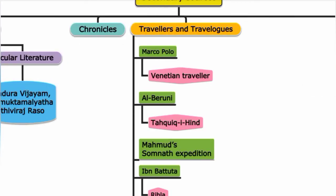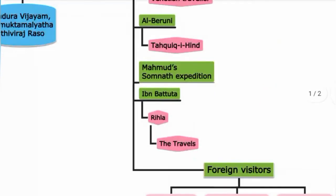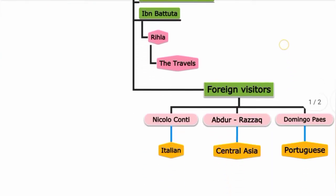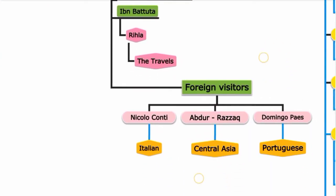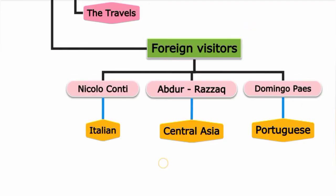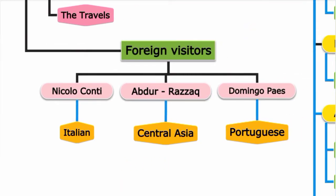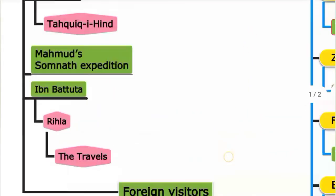Key travelers include: Marco Polo, a Venetian traveler; Al-Beruni, who wrote Tahik-e-Hind; Muhammad, who documented the Somnath Expedition; and Ibn Battuta, who wrote Rihla (The Travels). Foreign visitors also include Niccolo Conti from Italy, Abdurrazak from Central Asia, and Domingo Paes.